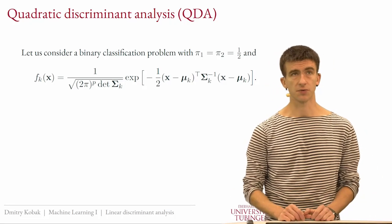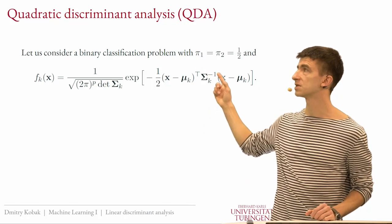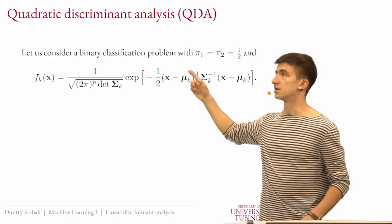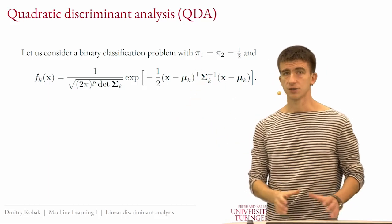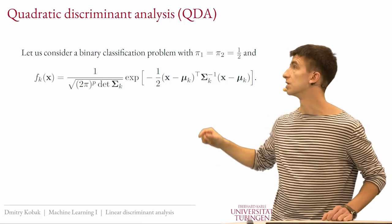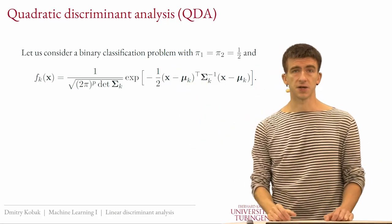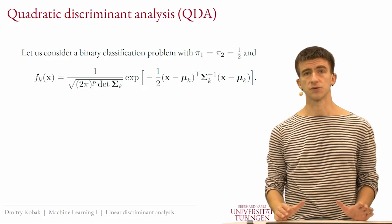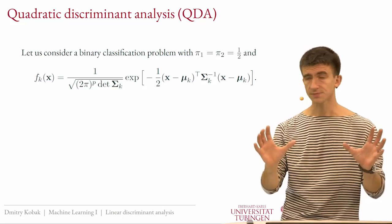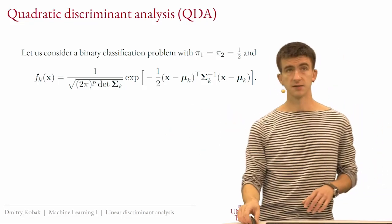Now let's go through the math. For simplicity, I'll assume the priors are all the same — this doesn't change the math much, just simplifies it. And we'll consider a binary classification problem, with two classes, which we'll use throughout the lecture.